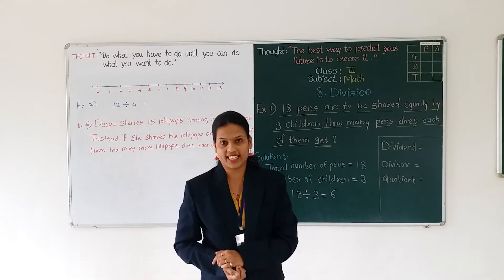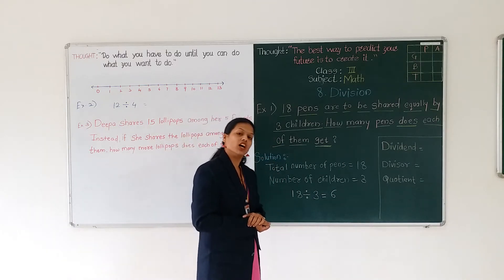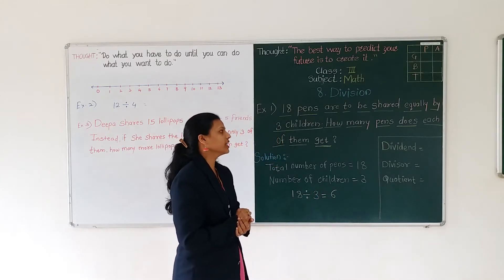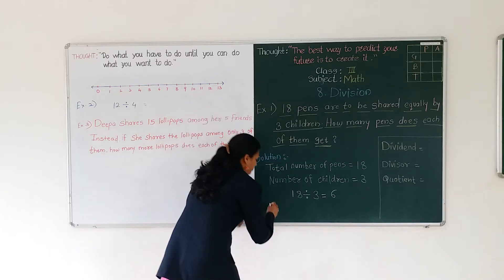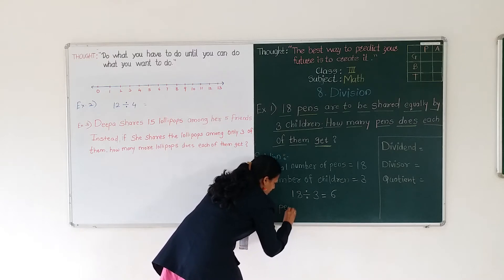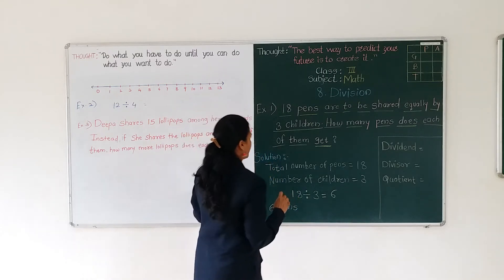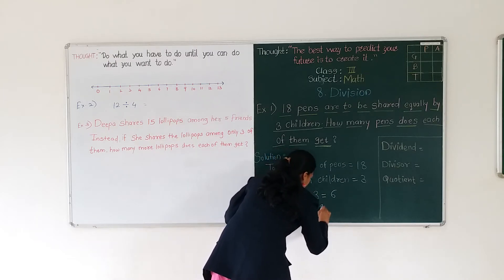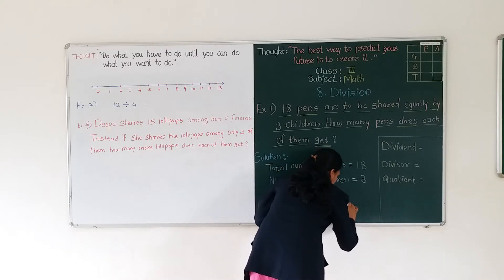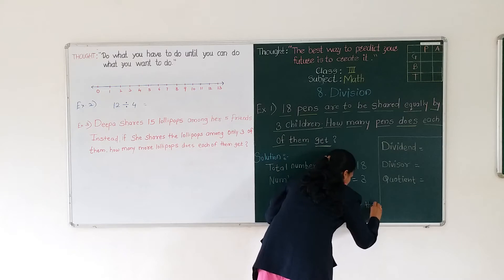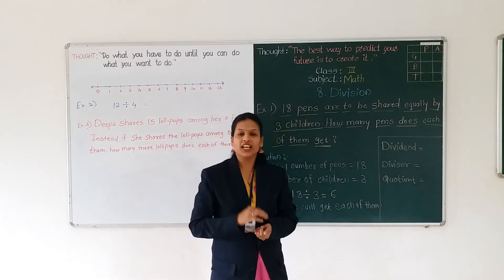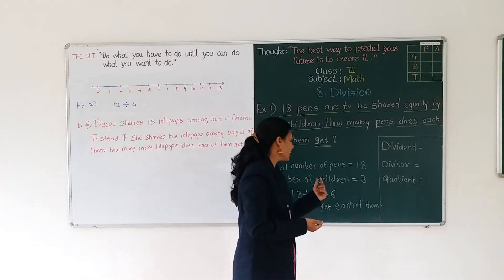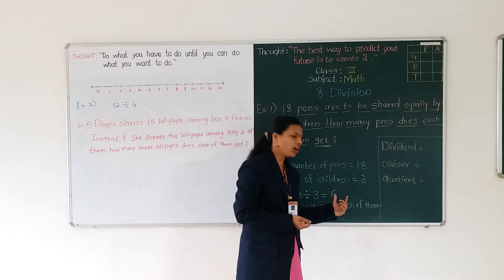So 6 is your answer. As this is a word problem, we have to mention the answer in words. How many fans does each of them get? Each of them will get 6 fans. Now, as I told you, number 18 is your dividend, 3 is your divisor, and 6 is your quotient.